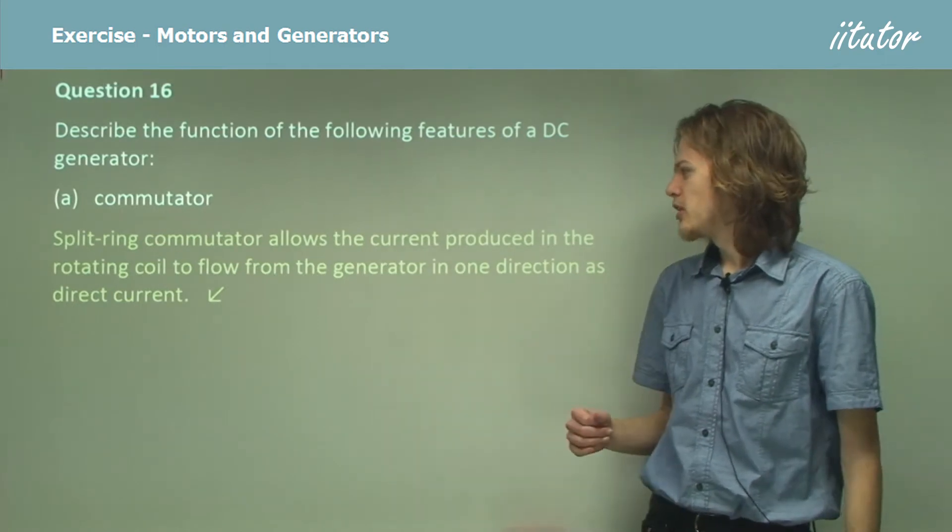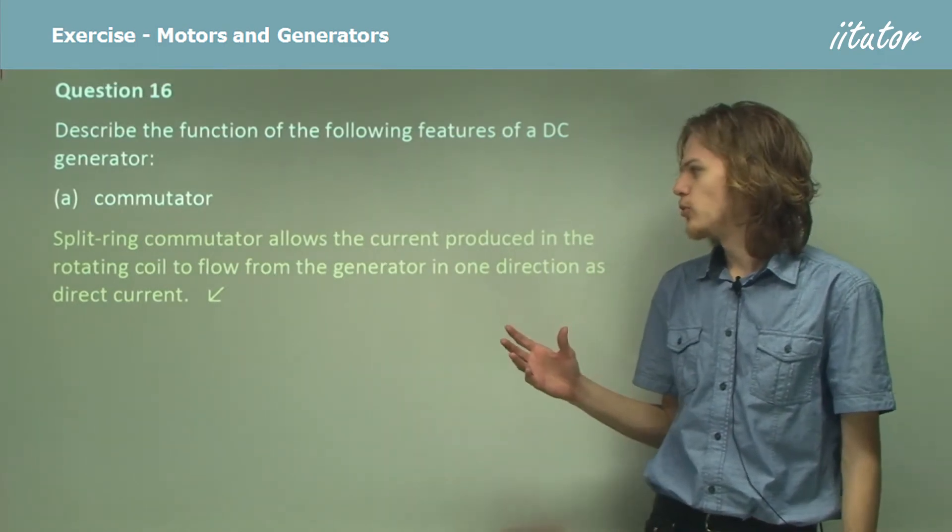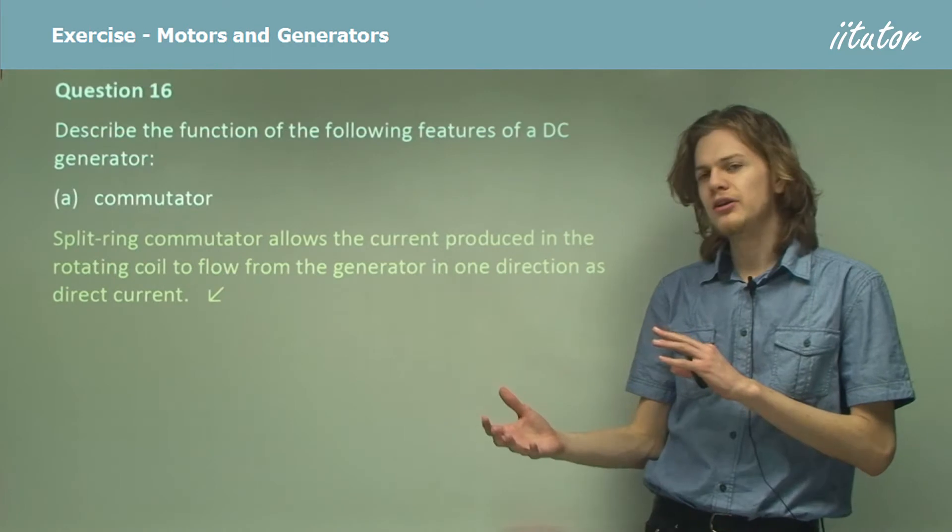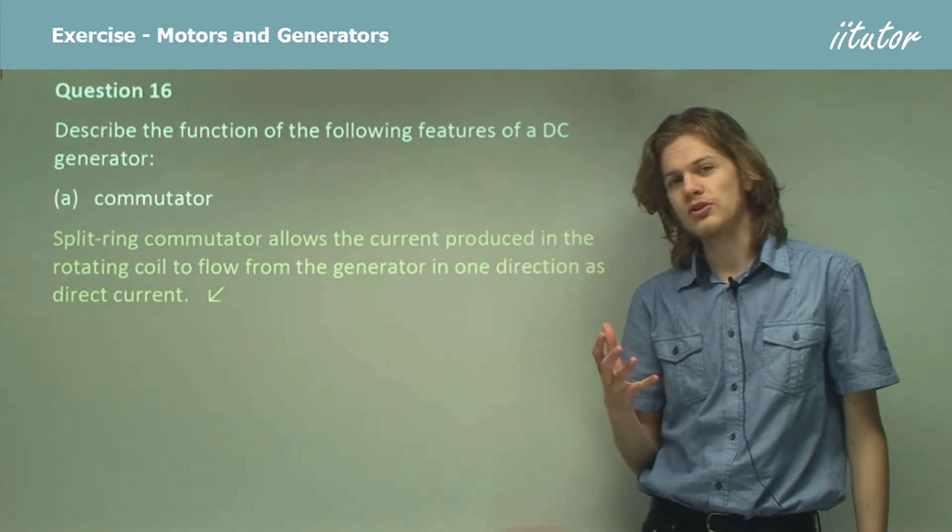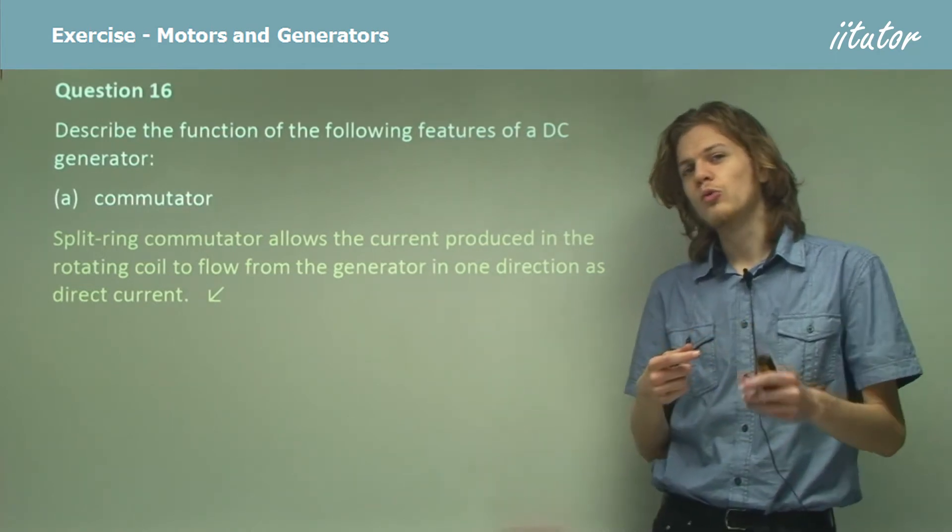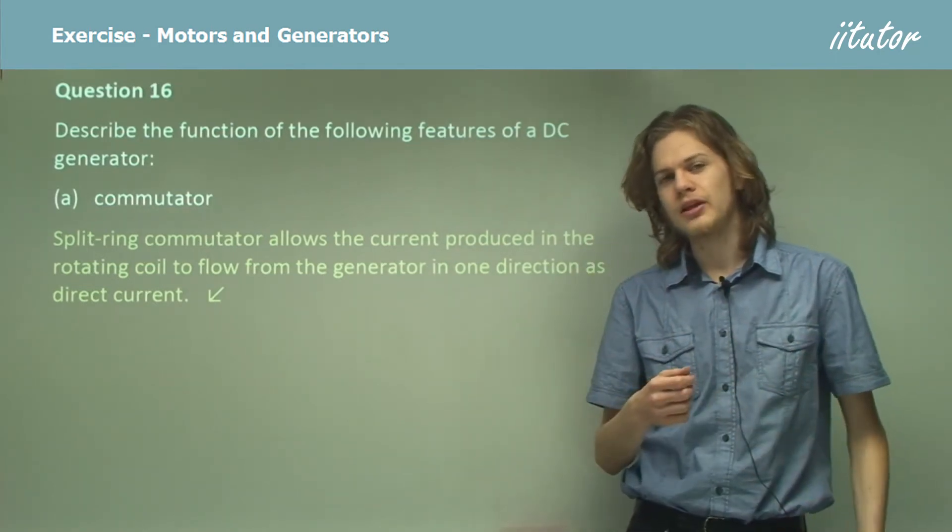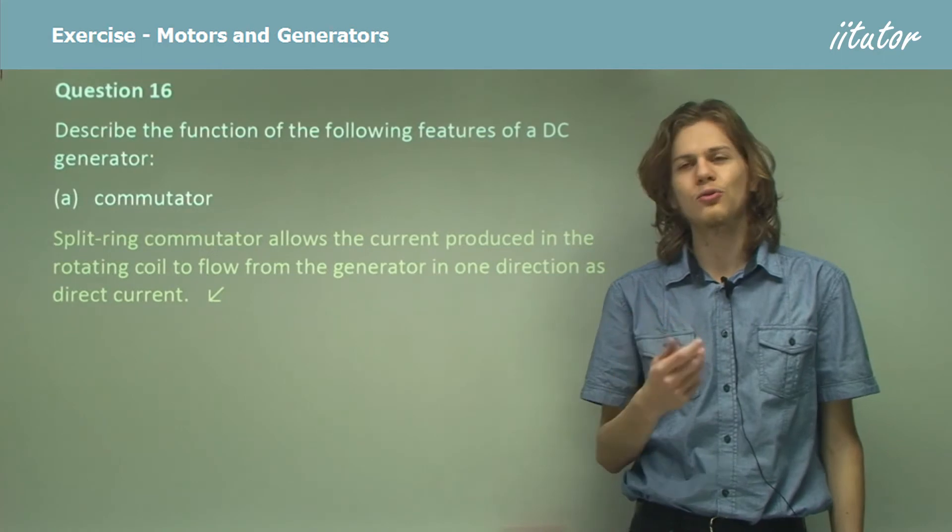Split ring commutators allow the current produced in the rotating coil to flow from the generator in one direction only, as a direct current. If we don't have the split ring commutator, then the rotating coil will produce an alternating current, instead of a current moving in a single direction.